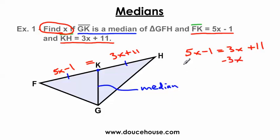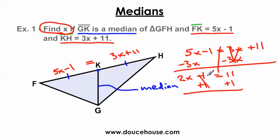And I end up with 2x minus 1 equals 11. Let me add 1 to both sides. And if I keep going here, 2x is equal to 12. Well, divide by 2 and I get x is equal to 6. And so that's it. We know x is equal to 6.